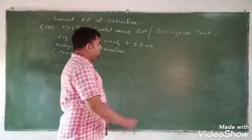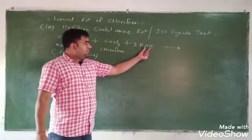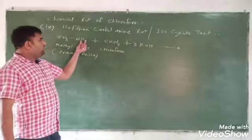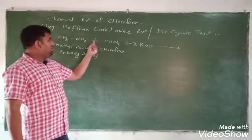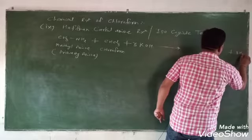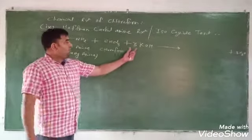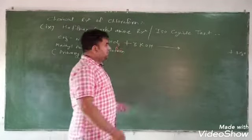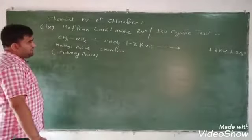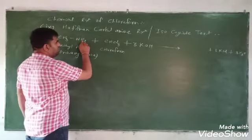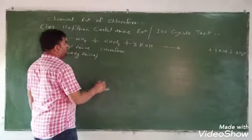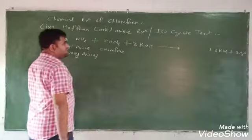So 3 molecules of base are taken — 3 molecules of potassium hydroxide, giving 3 hydroxide ions. There are 3 hydrogens: 1 from the amine and 1 from chloroform, making 3 hydrogens total. 3 hydroxide ions react with 3 hydrogens, so 3 molecules of water are formed. Also, 3 potassium and 3 chloride ions give 3 molecules of potassium chloride.